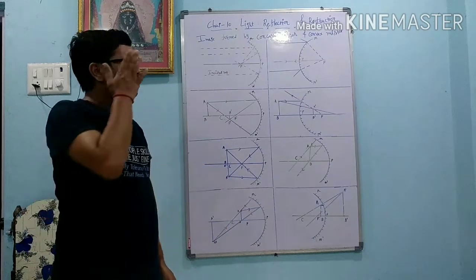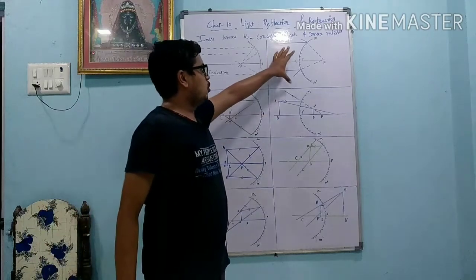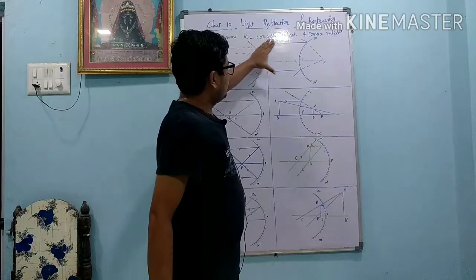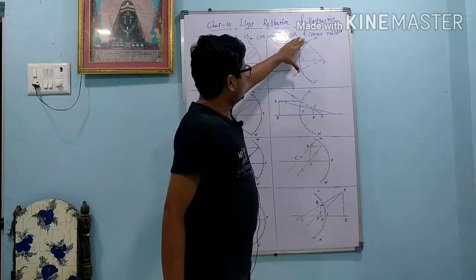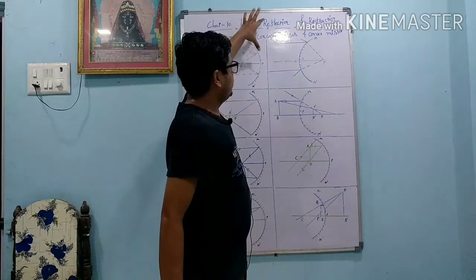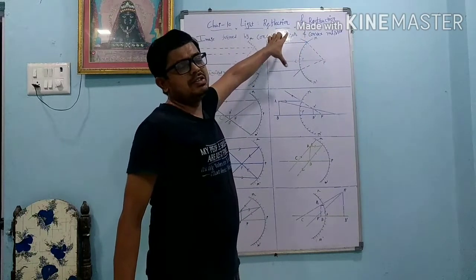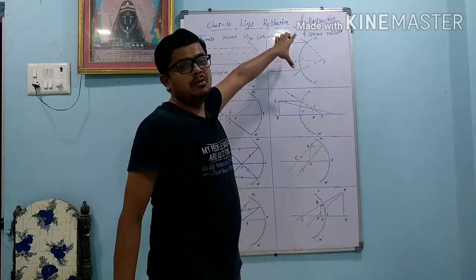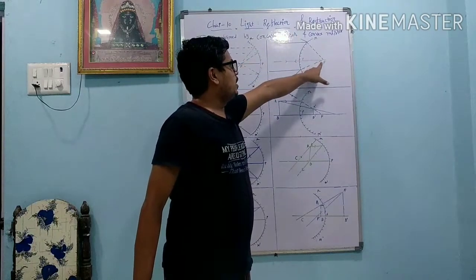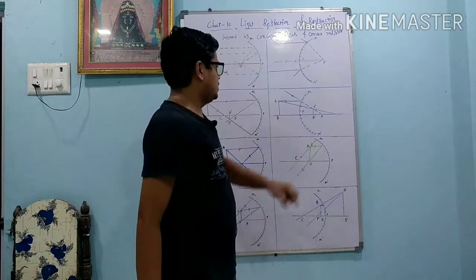Now we are going to discuss about the convex mirror. What happens in a convex mirror? If we keep the object at infinite distance, after reflection the rays do not meet but they go in other directions. These rays are called divergent rays. The image obtained is virtual and erect and highly diminished.